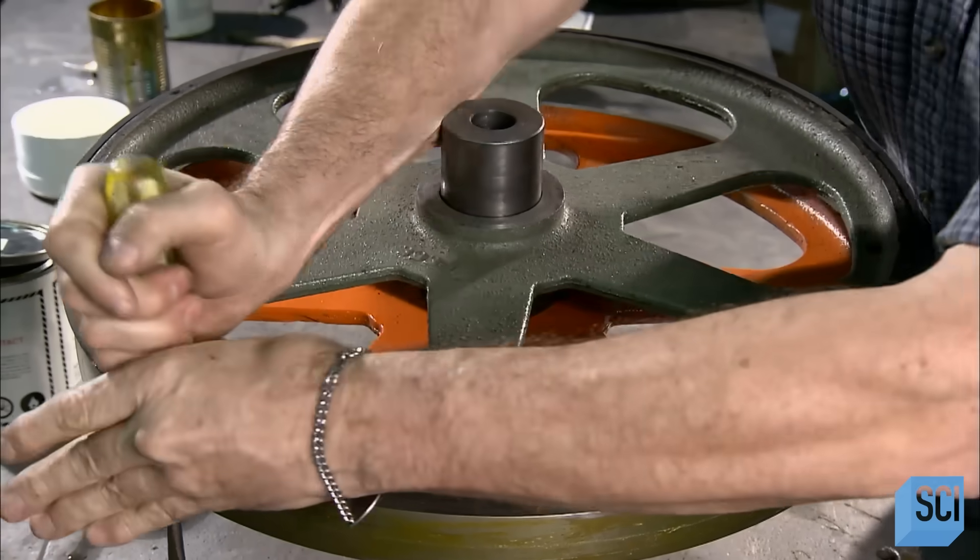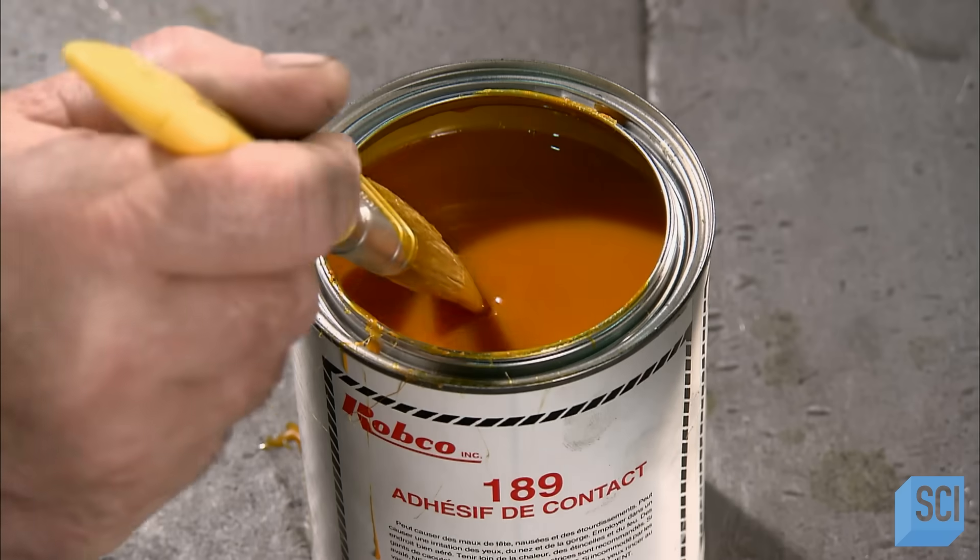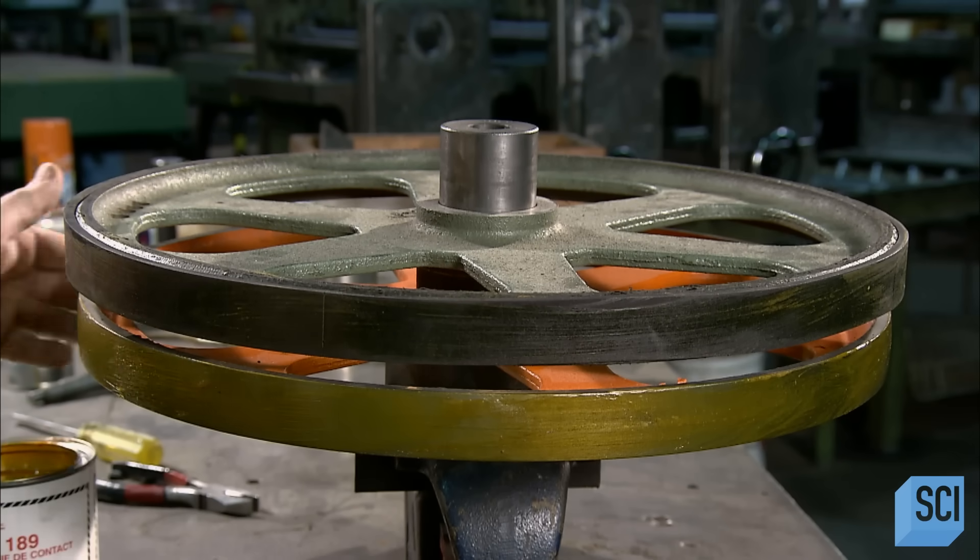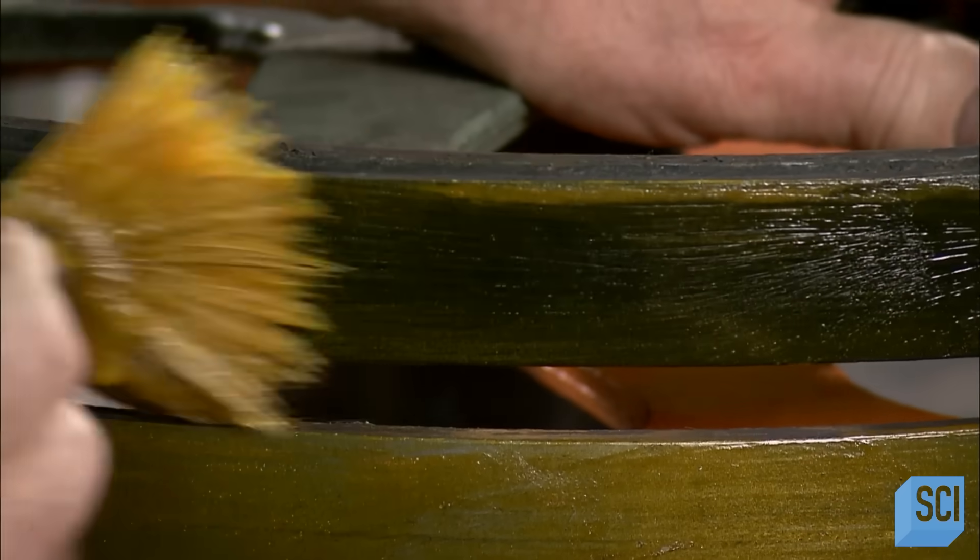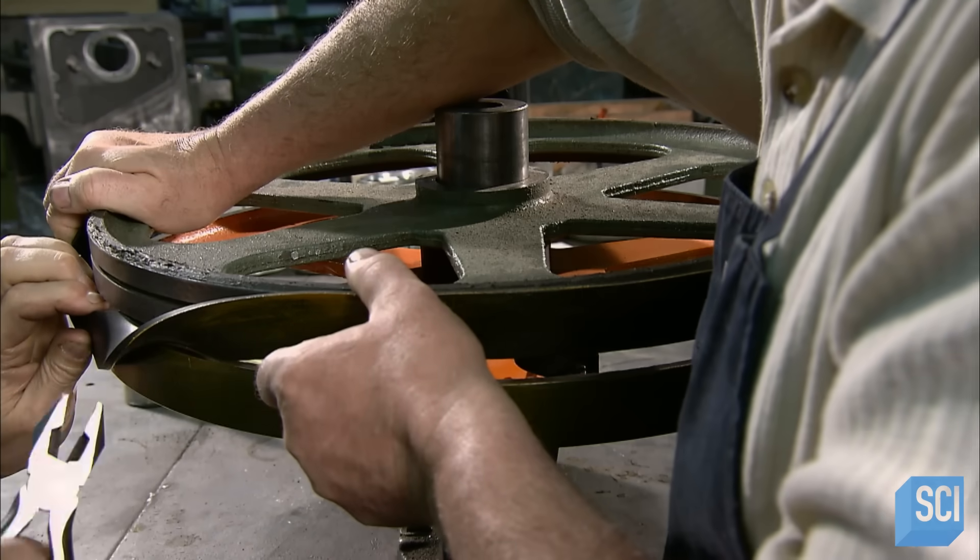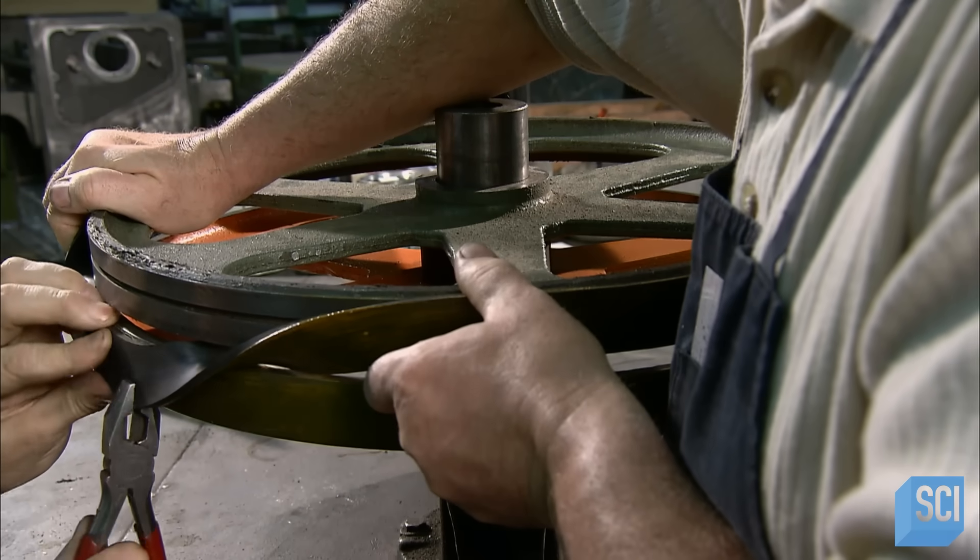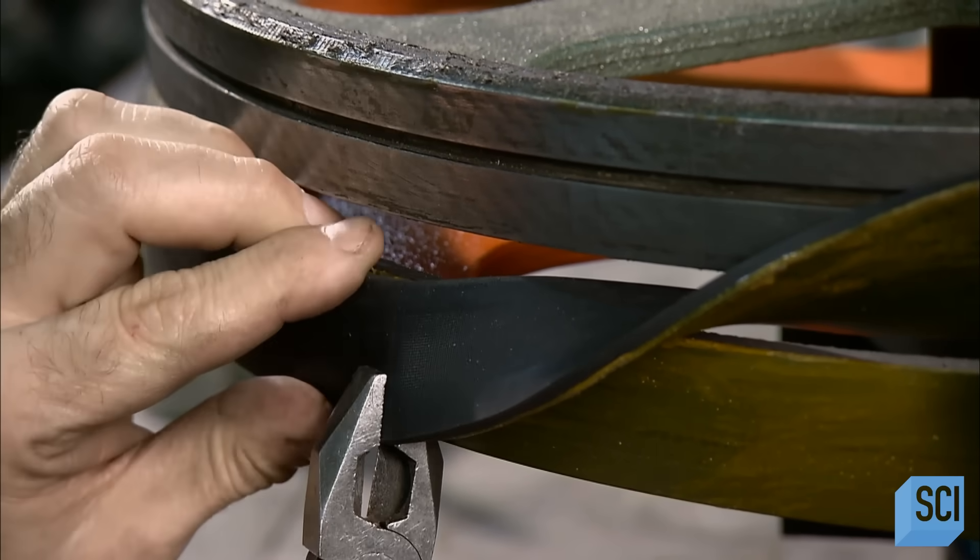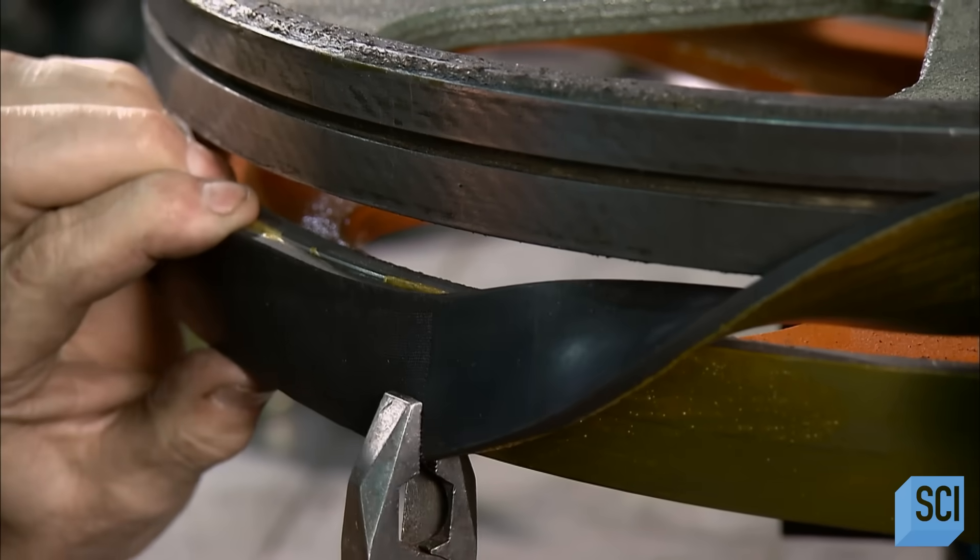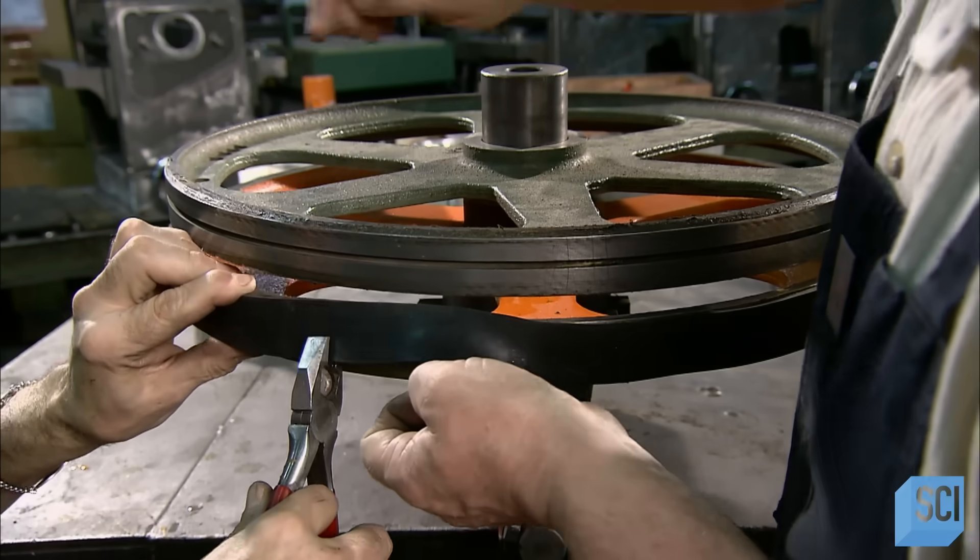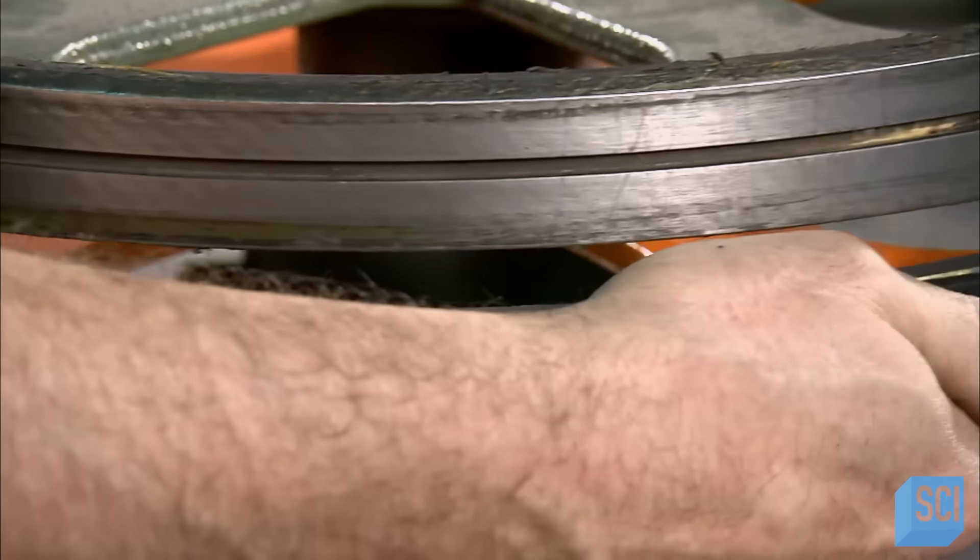Next, they coat both the edge of the wheel and the rubber band on the guide with contact cement adhesive. Then, they carefully pull the rubber band off the guide, flip it over, and press the glued side against the glued surface of the wheel.